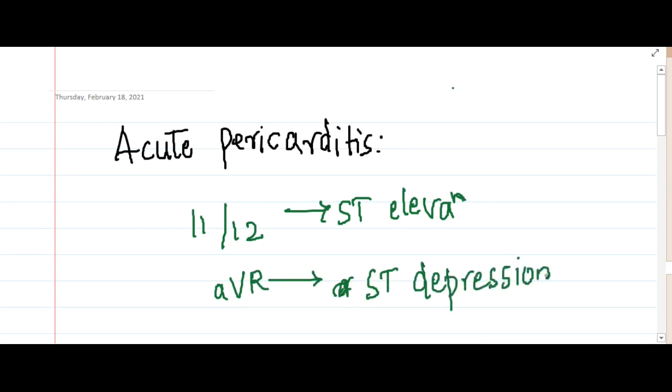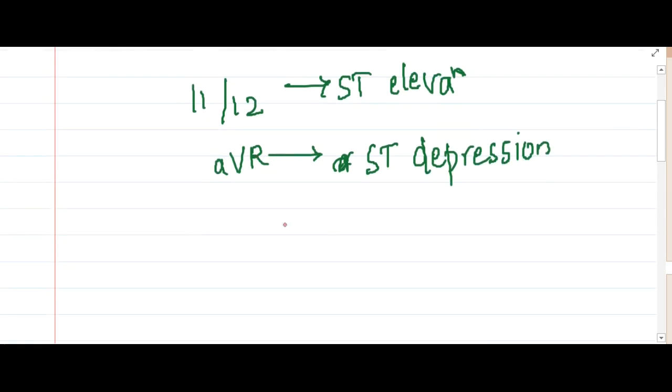AVR will also show depression in normal person also. So how do you see this AVR? In the AVR, you will see that the P wave is inverted and there is inverted saddle-shape depression, ST segment depression, and T wave is inverted. This is how you see in AVR.